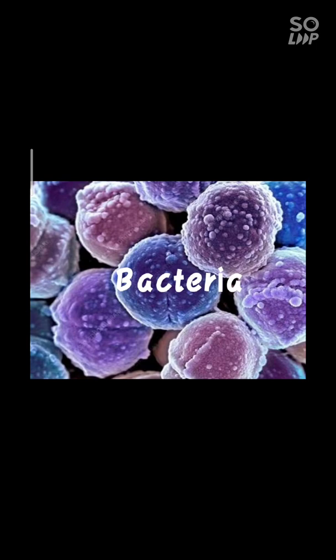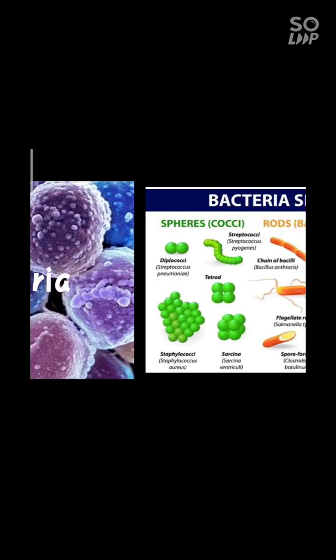They are larger than viruses but still are very small. There are mainly three groups of bacteria on the basis of their shapes: spherical bacteria, also known as cocci; rod-shaped bacteria, also known as bacilli; and spiral bacteria.